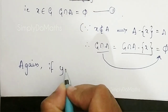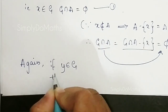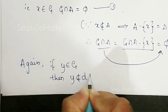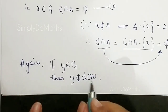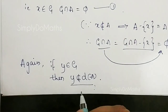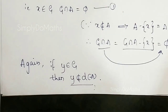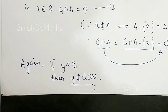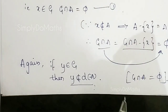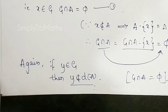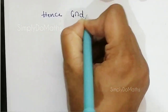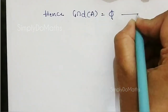If y is any element belonging to G, then y does not belong to the derived set of A. Because if y belonged to the derived set of A, then y would be a limit point, and by definition every open set containing y would contain a point of A other than y. Since G is an open set containing y, G would contain a point of A other than y, which contradicts G intersection A being empty. Therefore y does not belong to the derived set of A, and G intersection the derived set of A equals empty. Call this Equation 2.